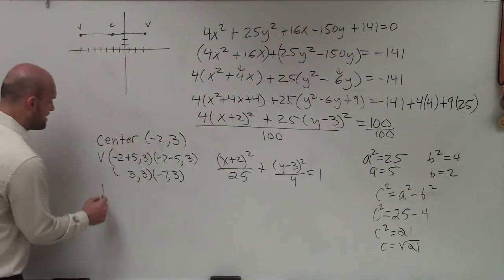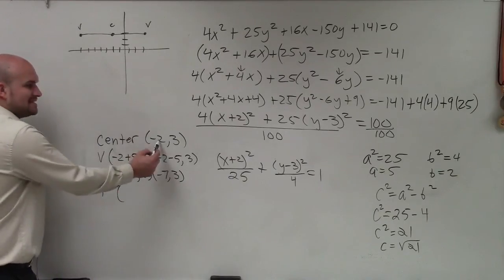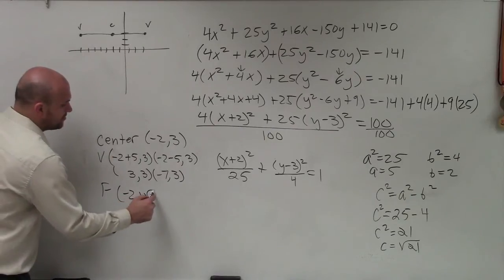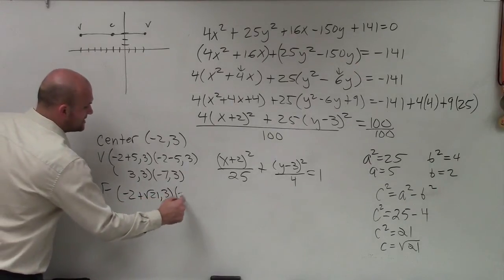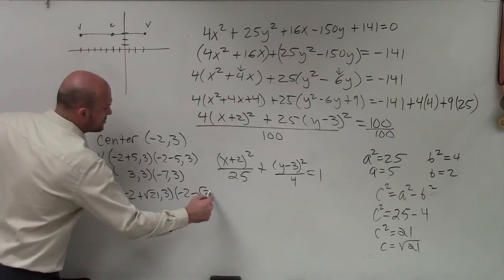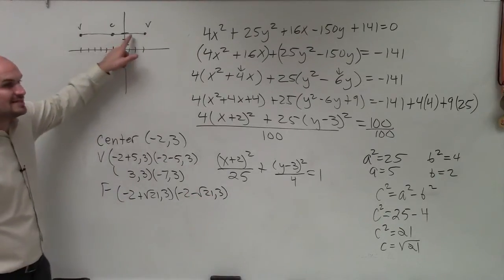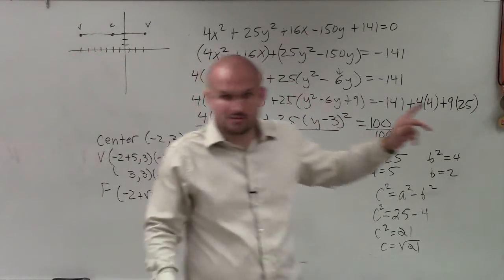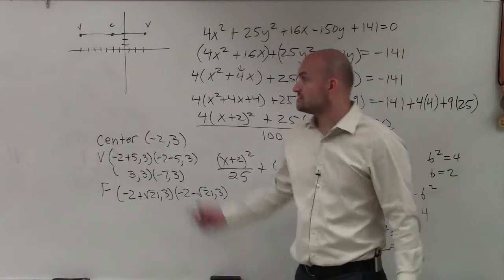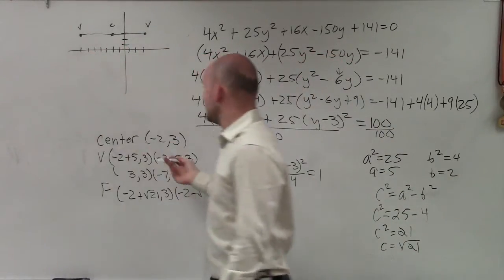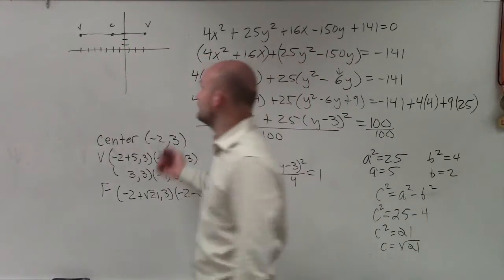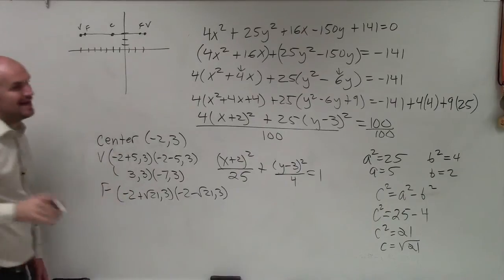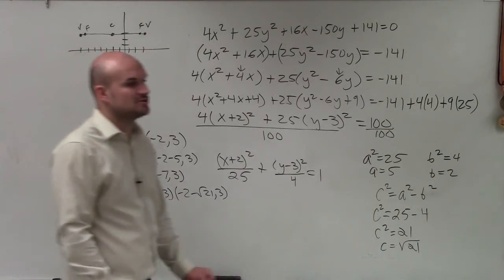So now, to find my foci, all I'm going to do is do the same thing. I'm going to add and subtract from my x-coordinate. So it's going to be negative 2 plus the square root of 21, comma, 3. And negative 2 minus the square root of 21, comma, 3. All we're doing is adding and subtracting from there. Does everybody see that, how that works? Anybody have any questions? If you guys want to estimate it, they're probably going to be like out here. I'm just going to estimate my answer.